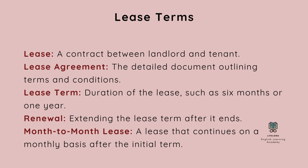Here are some lease terms. Lease: a contract between landlord and tenant. Lease agreement: a detailed document outlining terms and conditions. Lease term: duration of the lease, such as six months or one year. Renewal: extending the lease term after it ends. Month-to-month lease: a lease that continues on a monthly basis after the initial term.